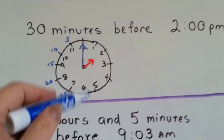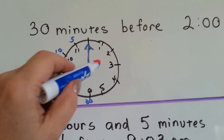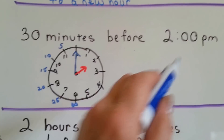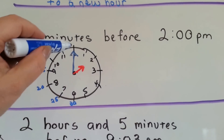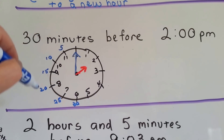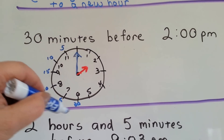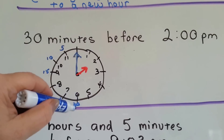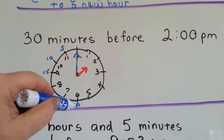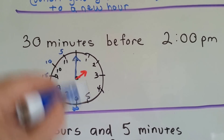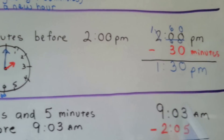Let's look at our clock. Here's 2 o'clock. And if we count back 30 minutes — 5, 10, 15, 20, 25, 30 — then the minute hand would be on the 30 and the hour hand would move back to the 1. 1:30 PM. That's not that hard, is it?